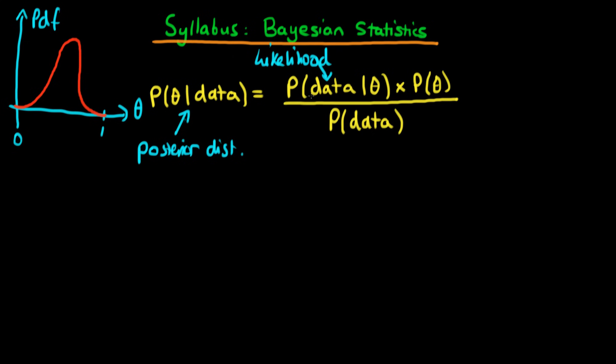The idea with the likelihood is that we specify a model for actually generating our data, and then for each particular value of theta, we ask what would be the probability — if that model was correct — that we would have actually obtained our data.